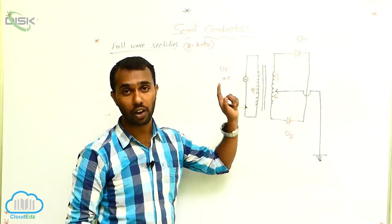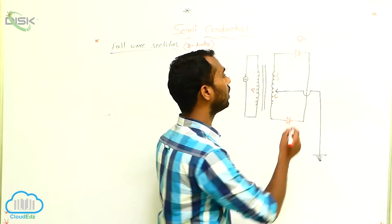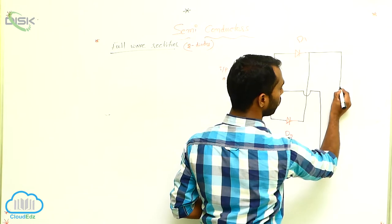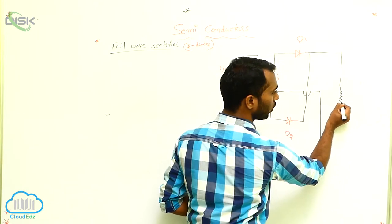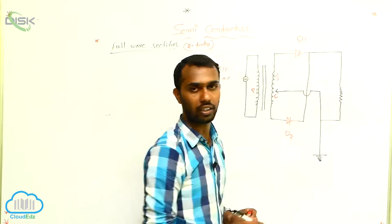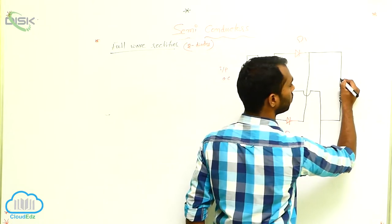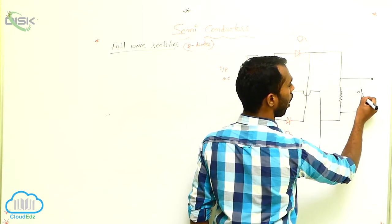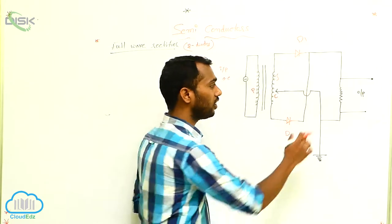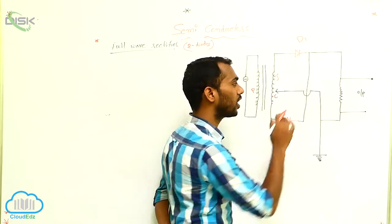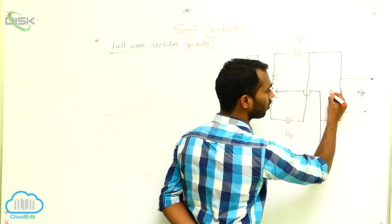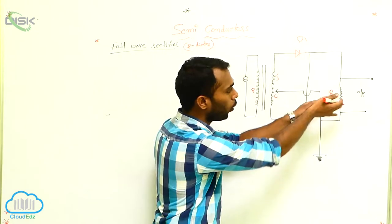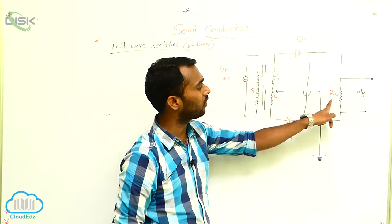Now I have to take the output. You should remember: in electronics, we get the output across the resistor only. That's why I am extending this circuit diagram to take the output. Here I am using a resistor and taking the output across that resistor. This is the output.